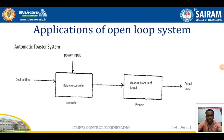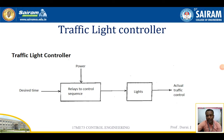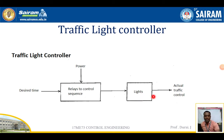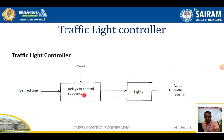The next example is the traffic light controller. In the traffic light controller, the controller is the relay with a control sequence, and the process is the lights. According to the desired time set, the controller gives signals and the light changes accordingly.